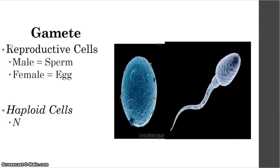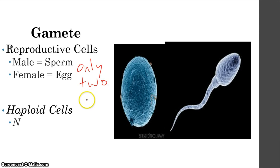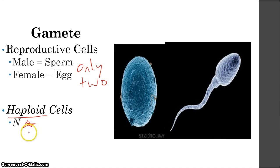The next type of cell you might run into is called a gamete. Gamete cells are reproductive cells. For men, these are your sperm cells, and for females, these are your eggs. These are the only two gametes we'll find inside of humans. These cells are what we call haploid cells, or N cells, and once again we'll get to what that means at a later time.